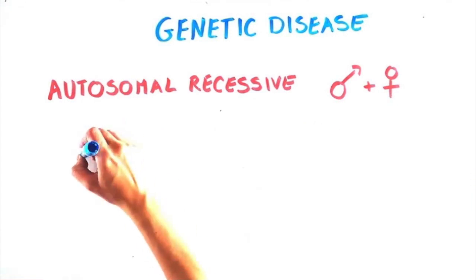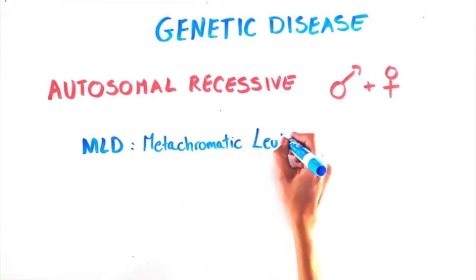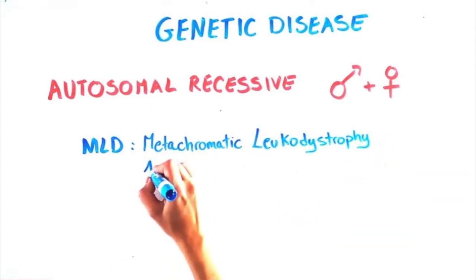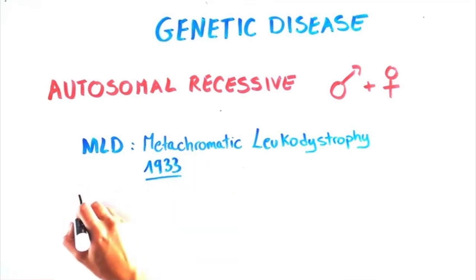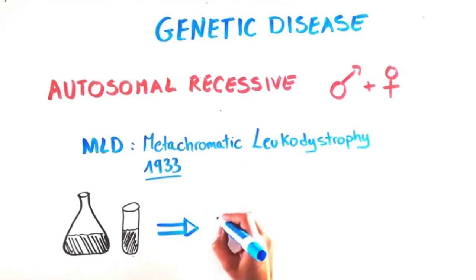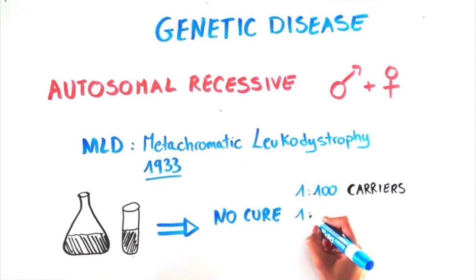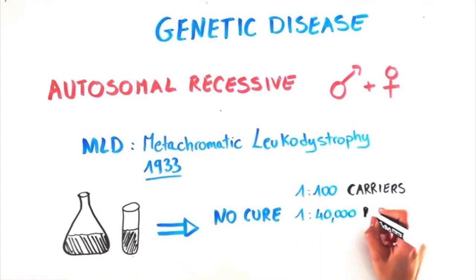One devastating autosomal recessive disease is MLD, which stands for metachromatic leukodystrophy. MLD was first discovered in 1933, and despite much progress in our understanding of the disease, there's still no cure. One in 100 people worldwide carry the gene mutation that causes MLD, meaning MLD occurs once in every 40,000 births.